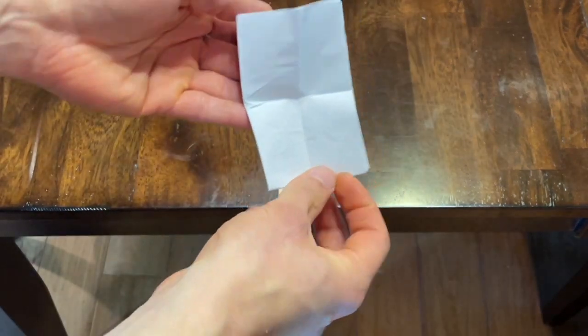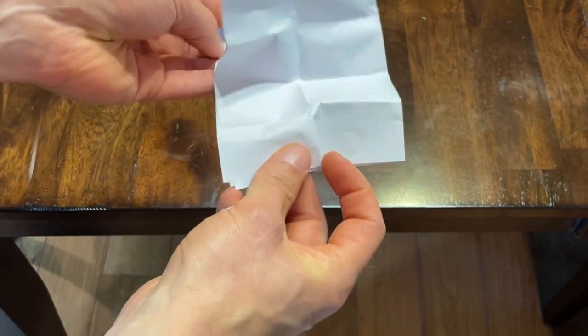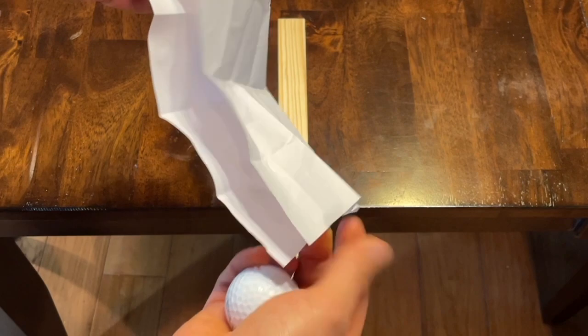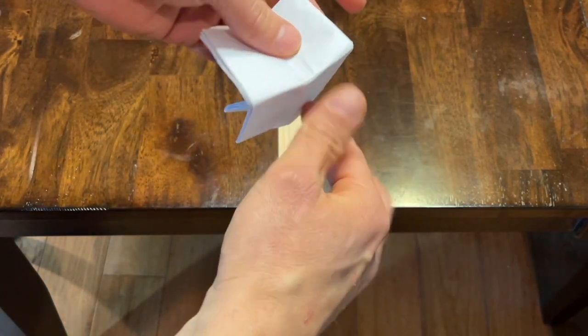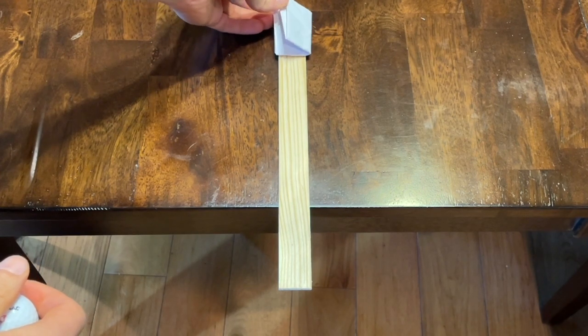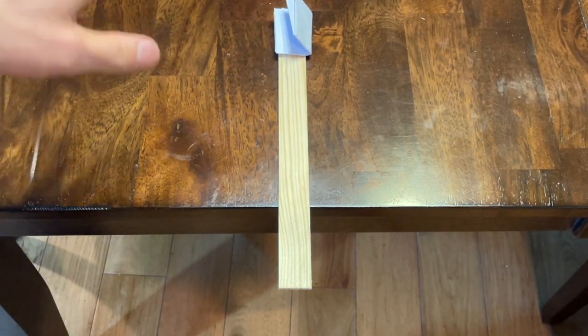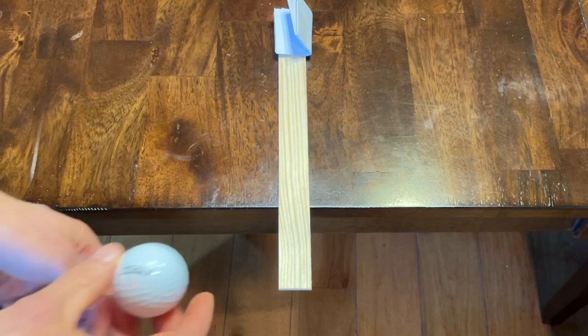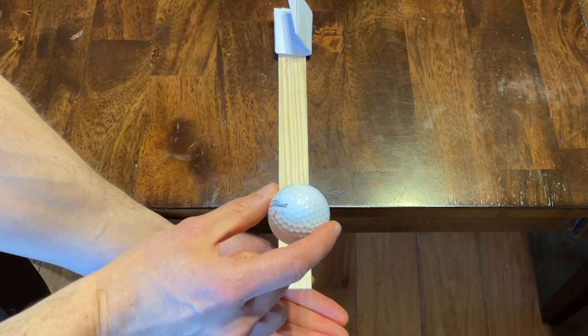Now what happens if I take a regular sheet of eight and a half by eleven paper and fold it up and stick it on the end of the paint stick. There's a little bit of weight on that side. Now what happens if I drop it from just a few inches up?